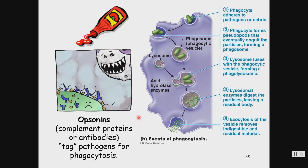What helps those phagocytic cells is something called opsonins — think of them like ketchup or Velcro. Opsonins include antibodies, those protective immune proteins made by plasma cells, and complement proteins. They help phagocytes eat things and grab hold. When an invader like a bacterium has opsonins coating it, it basically targets them for destruction.